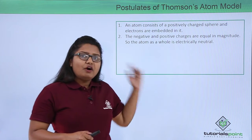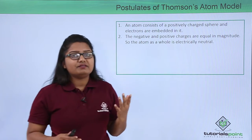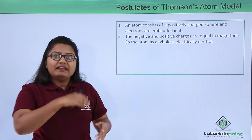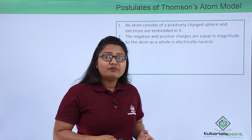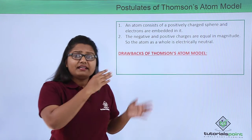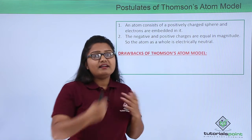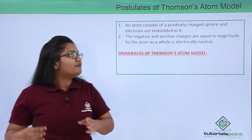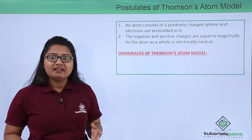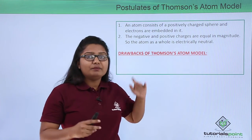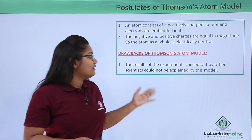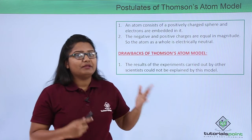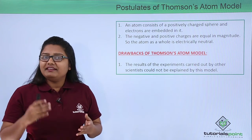Now this Thomson's model was very successful in explaining the neutrality of an atom. But there were many other scientists who were also working in this field, and the results of their experiments were something different from that of Thomson's. Those results could not be explained on the basis of Thomson's atomic theory, so this was a drawback of Thomson's atomic model which eventually led to its failure.